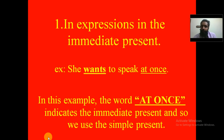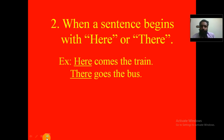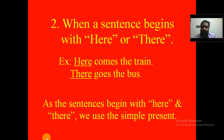Immediate present means which is going to happen at present. The second usage is when a sentence begins with 'there' or 'here.' Examples: 'Here comes a train' and 'There goes the bus.' As the sentences begin with 'here' and 'there,' we use the simple present tense.